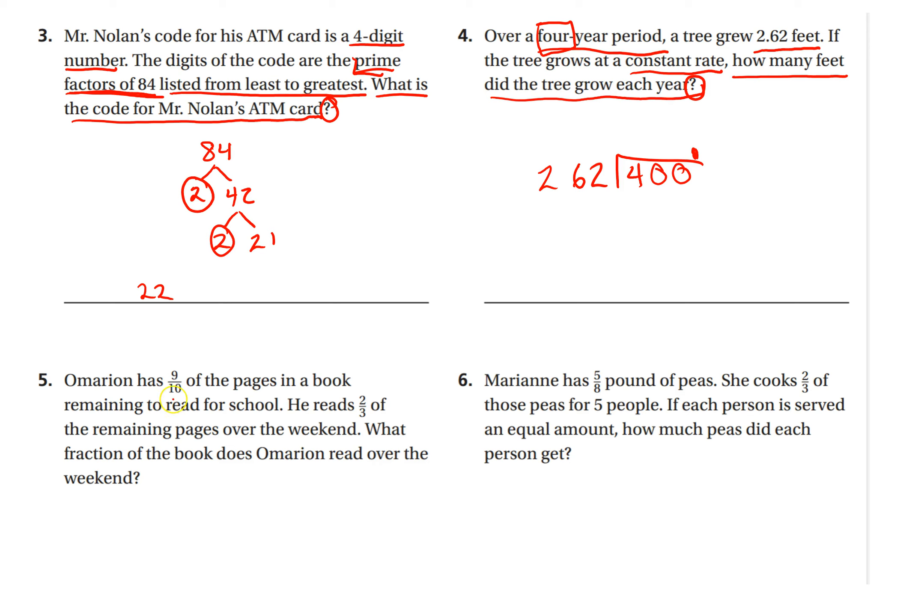Omarion has nine-tenths of the pages in the book remaining to read for school. He reads two-thirds of the remaining pages over the weekend. What fraction of the book does Omarion read over the weekend? So he has nine-tenths, and he read two-thirds of that. So what we need to figure out here is two-thirds of nine-tenths. That 'of' is our key word for multiplying. So we're going to be multiplying these two numbers. I'll let you cross-simplify and finish that multiplication.